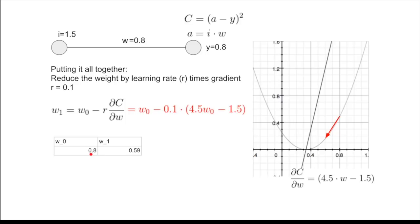So, as you remember, our weight was 0.8. When we put that value in here and here, and calculate the value of this expression, it comes out to 0.59. And we iterate this.